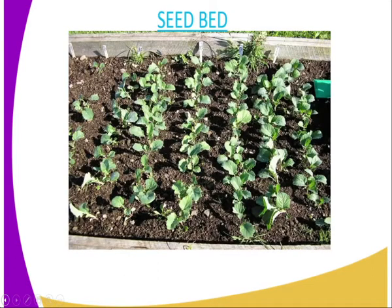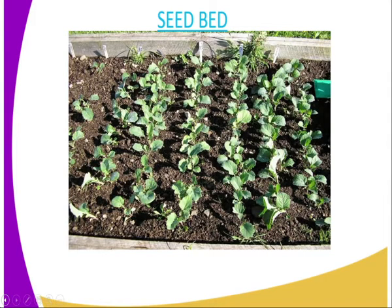There is a diagram that demonstrates what a seed bed looks like. You can see it is a portion of land where seeds or seedlings are normally grown and watered while on the same piece of land until maturity, after which they are harvested.